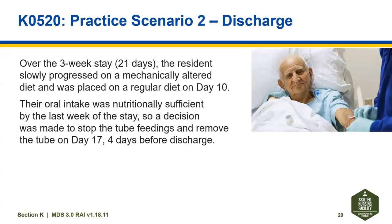Over the three-week stay — 21 days — the resident slowly progressed on a mechanically altered diet and was placed on a regular diet on day 10. Their oral intake was nutritionally sufficient by the last week of the stay, so a decision was made to stop tube feedings and remove the tube on day 17, four days before discharge.